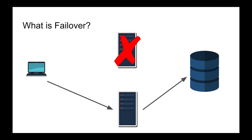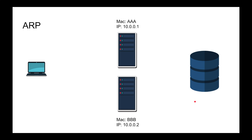Something happened on the back end and the servers flipped to communicate with a completely different server. How does that happen? We can't just change IP addresses because the client is communicating with one IP address. Let's talk about ARP — address resolution protocol. As software engineers we deal with IP addresses; for example, 10.0.0.1:8080 to get a JSON response. But machines don't really deal in IP addresses — they deal with physical addresses, also called MAC addresses.